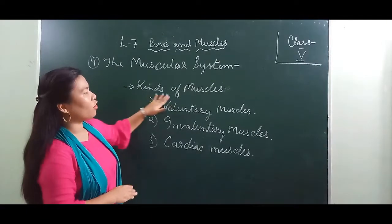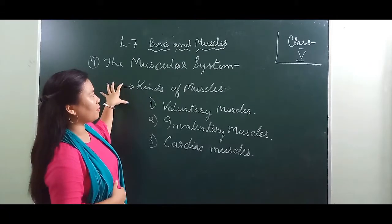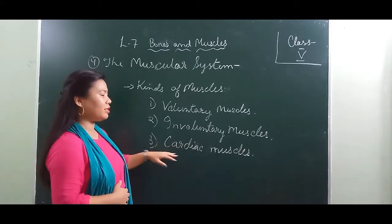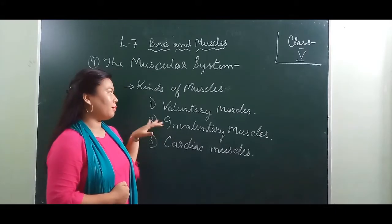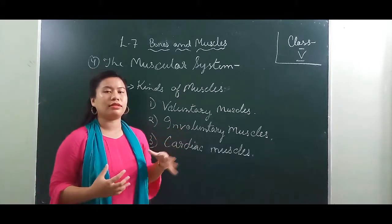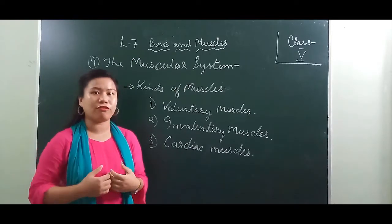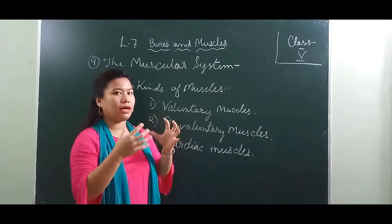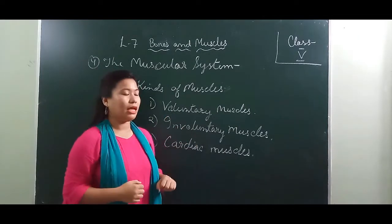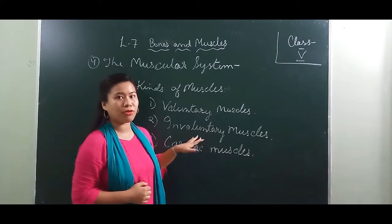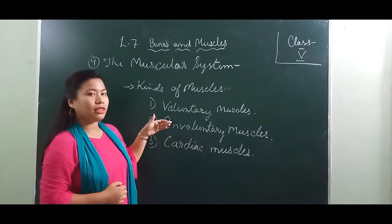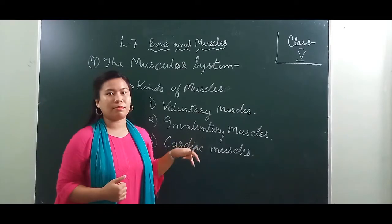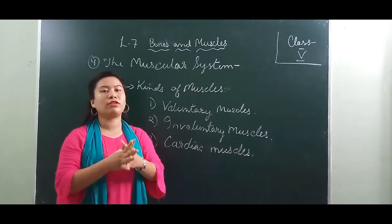Now let's look at the kinds of muscles. There are three kinds: voluntary muscles, involuntary muscles, and cardiac muscles. Voluntary muscles are muscles whose movement is under our control — for example, the movement of your hands, legs, and fingers. Involuntary muscles are the opposite — their movement is not under our control, such as the movement of the stomach, small intestine, and walls of blood vessels.